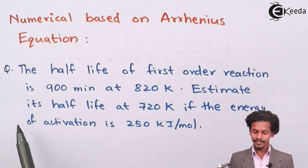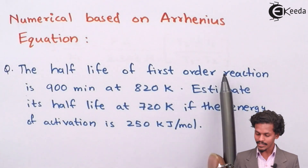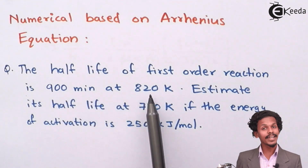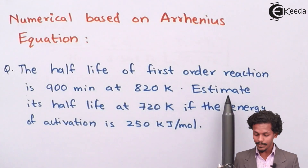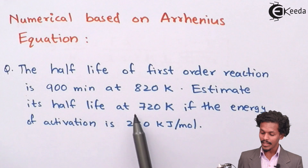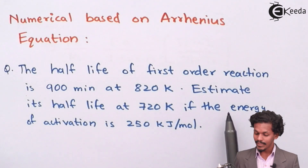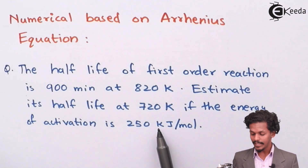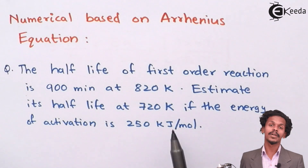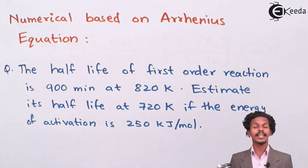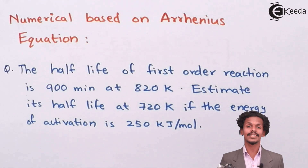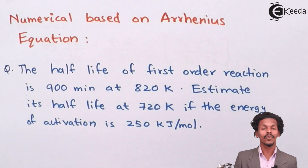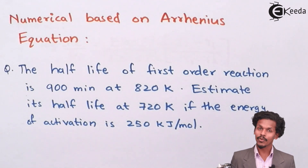The question says: the half-life of a first order reaction is 900 minutes at 820 Kelvin. We have to estimate its half-life at 720 Kelvin, if the energy of activation is 250 kilojoule per mole. First, we should extract the data from the given question and fulfill the requirement.